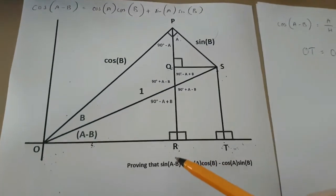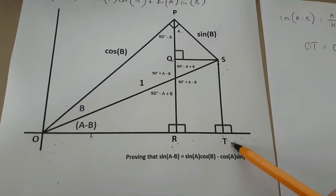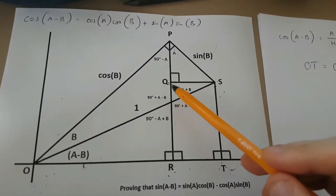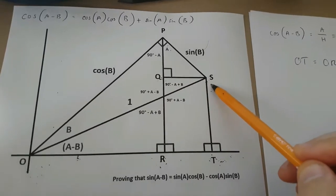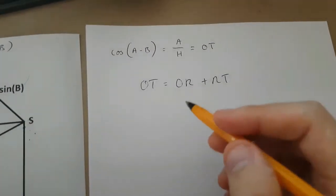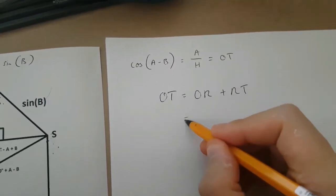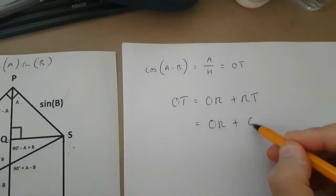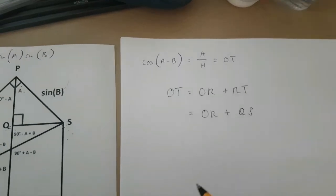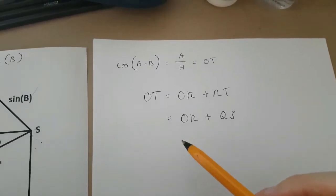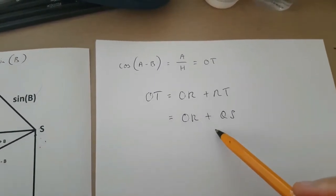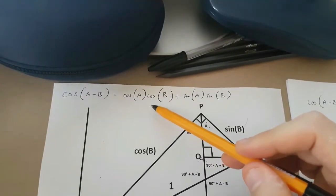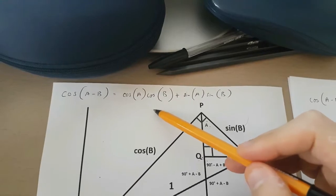Now, because RT is the same as the length QS, this means that OT is equal to OR plus QS. And this is the equation we are going to be using to prove that this up here is the case.